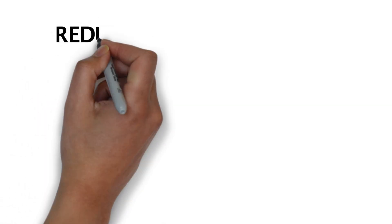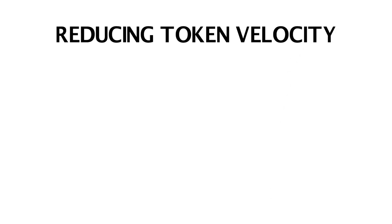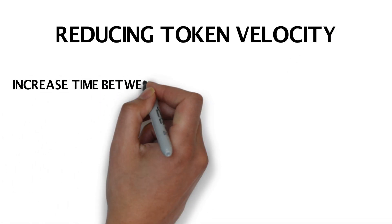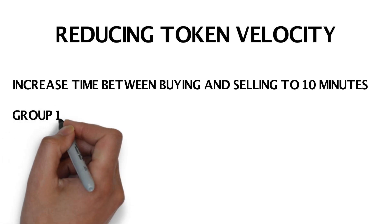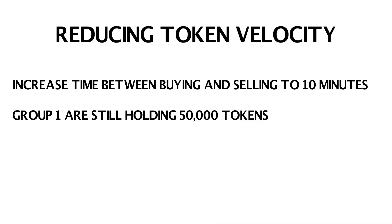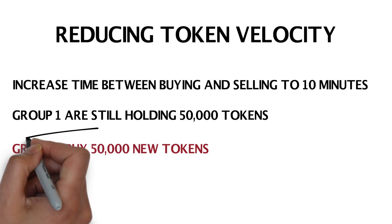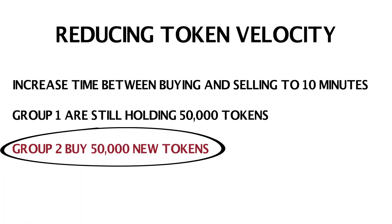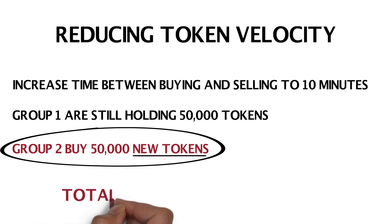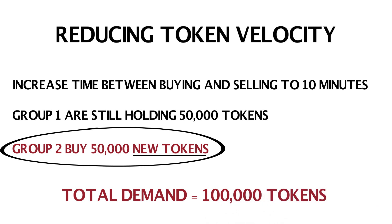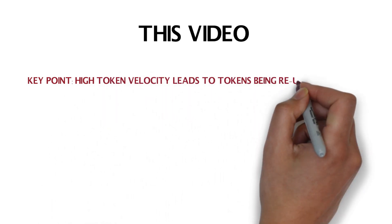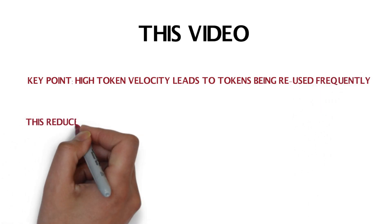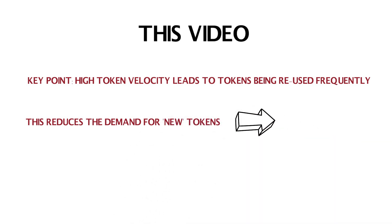What happens then if we reduce that token velocity? Let's imagine our example again, but instead the new time taken between the users buying tokens and the drivers cashing them out is 10 minutes — rather than just one minute as before. In this example, Group 1 would still be holding their 50,000 tokens when Group 2 purchased a further 50,000 from the app. In other words, Group 2 would have been buying 50,000 new tokens. The total demand has now risen to 100,000 tokens. This isn't a perfect example, but this video was made to highlight one very important point: if tokens flow through the system very quickly, each one can be reused very fast, thus reducing the demand for other tokens and causing an excess supply.